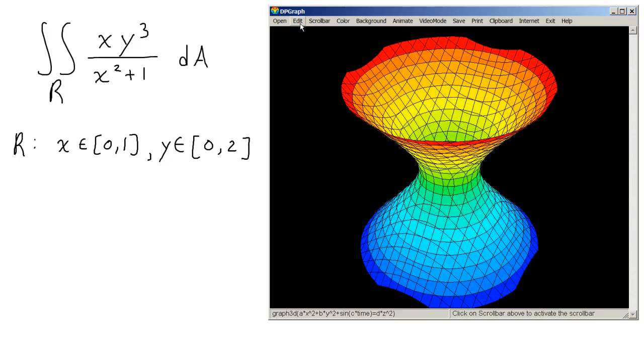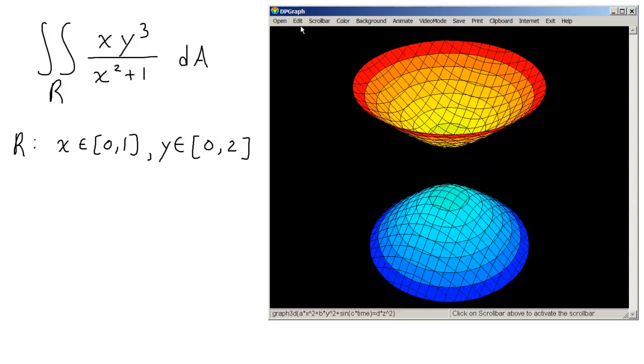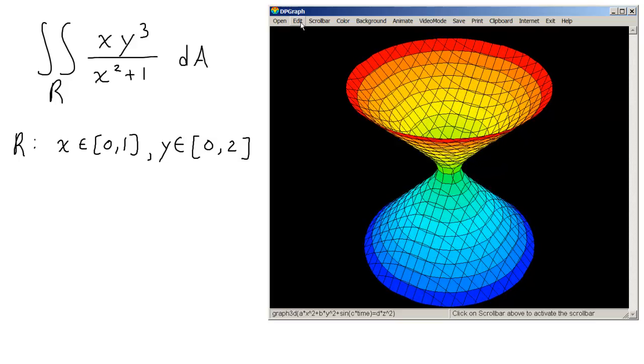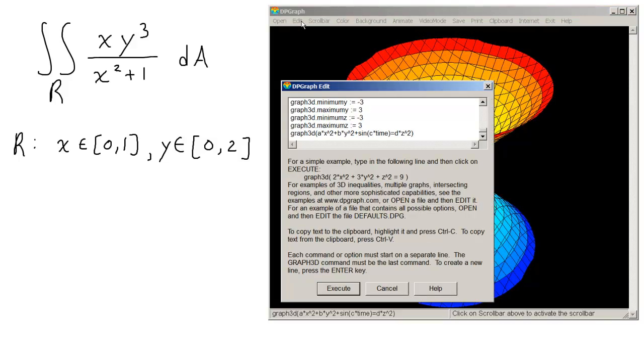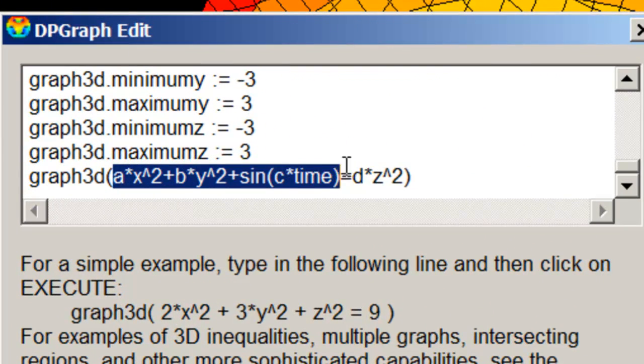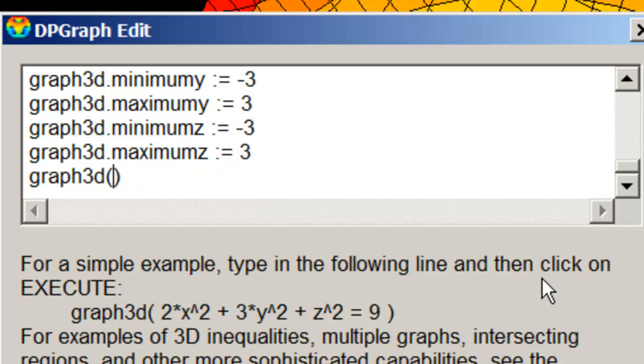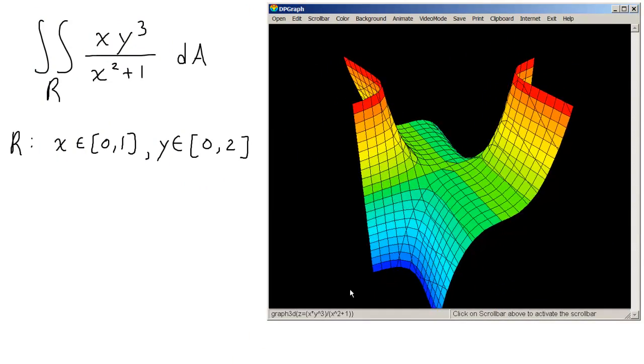Anyway, here we go. First thing we're going to do is plot the function and then see what the area that we're looking for actually looks like. So I go to the edit bar, the edit button that will bring up this menu. The very last line is where we're going to type in our code. It's relatively straightforward. We're going to type in z equals, then we'll type the numerator, x times y cubed over, and then parentheses, x squared plus 1. And that's that. Then we'll click execute. And that's our surface.